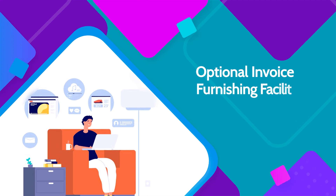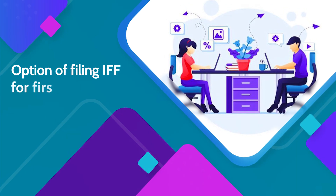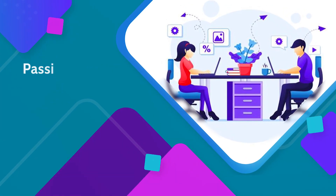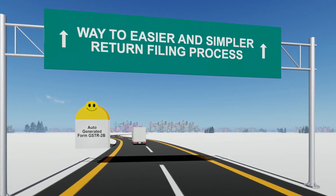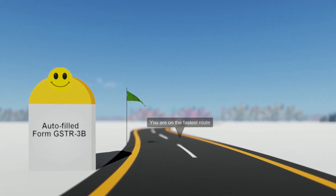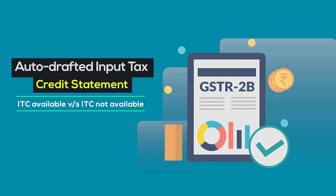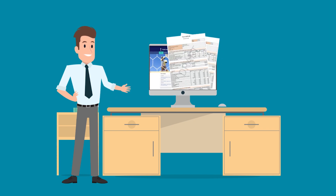An optional Invoice Furnishing Facility is available to furnish B2B invoices during the first two months of the quarter, to facilitate passing of ITC to the recipients. To make the return filing process simpler and easier, the GST portal now provides an auto-populated statement in Form GSTR-2B, which helps taxpayers in deciding upon ITC to be availed. These details are also auto-populated in Form GSTR-3B for taxpayers' reference.